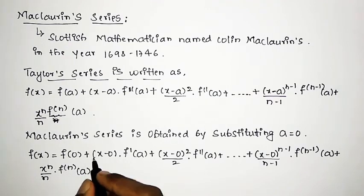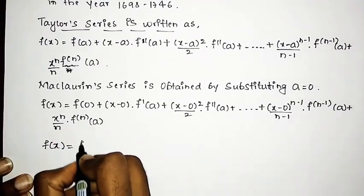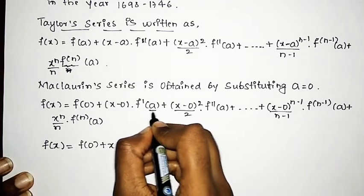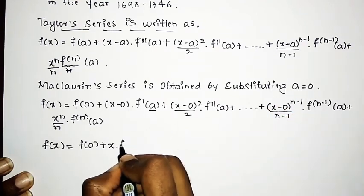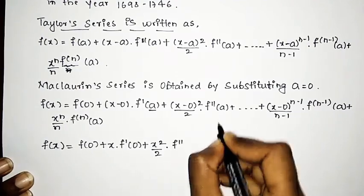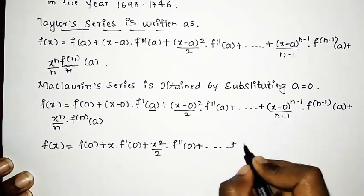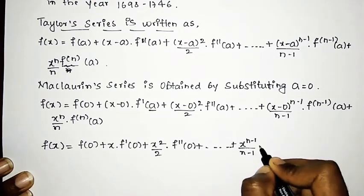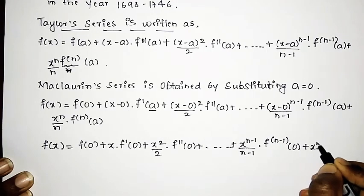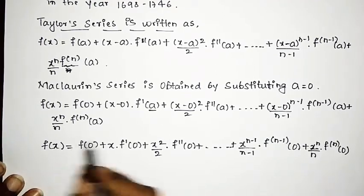Simplifying, f of x equals f of 0, plus x into f dash of 0, plus x squared divided by 2 into f double dash of 0, and similarly x raised to n minus 1 divided by n minus 1 into f raised to n minus 1 of 0, plus the nth term x raised to n divided by n into f raised to n of 0. This is the generalized equation for the Maclaurin series.